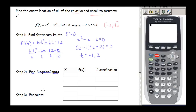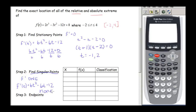Next we look for singular points, which occur where f prime does not exist. Looking at f prime of t, it's just a nice polynomial — any number we plug in gives us something nice, no zero in the denominator or anything like that. So there are no singular points. Last are the endpoints, which are given to us: t equals negative 2 and t equals 4.